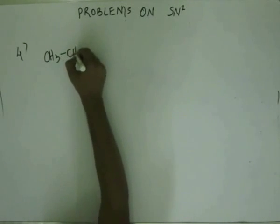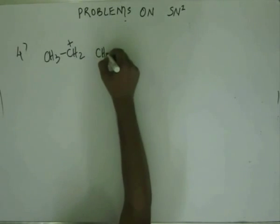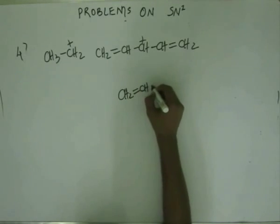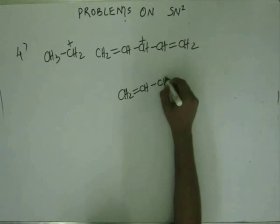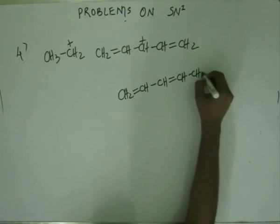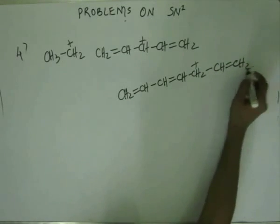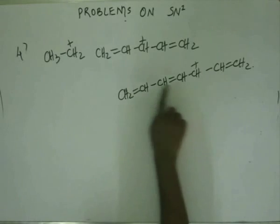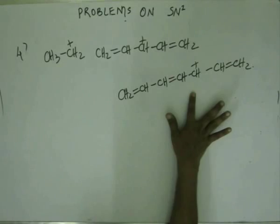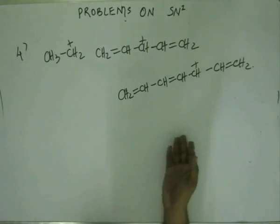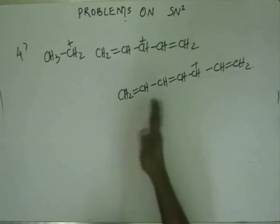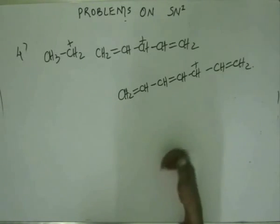Now building up on what we have been studying — again we have been given three intermediates and again we have to judge the relative rate of reaction. So again what we have to do is arrange them in the relative order of stability. I have already drawn the intermediates. Actually there will be a leaving group; once the leaving group moves out, we will have these intermediates. So we are left with three intermediates and we have to compare their relative stabilities.